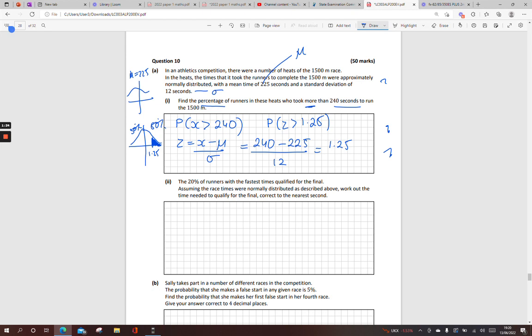So I look at my value at 1.25, I get 0.8944. So it's 1 minus 0.8944. When you do that, you get 0.1056. And here it says the percentage, 10.56%. Just times it by 100.